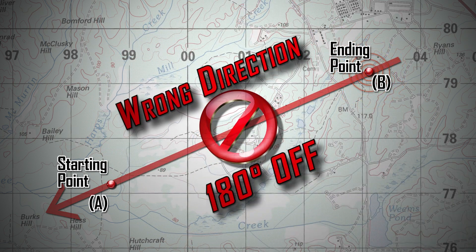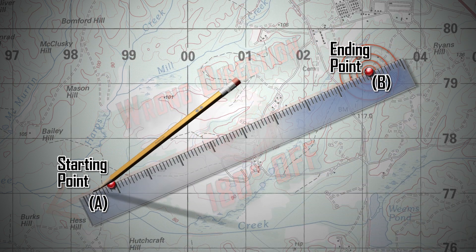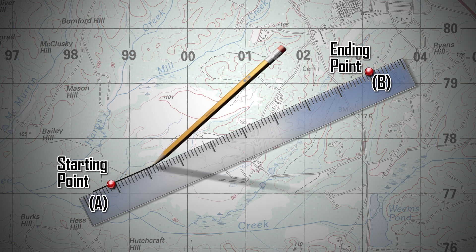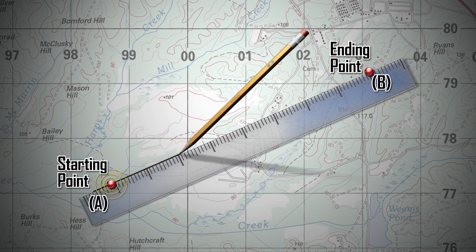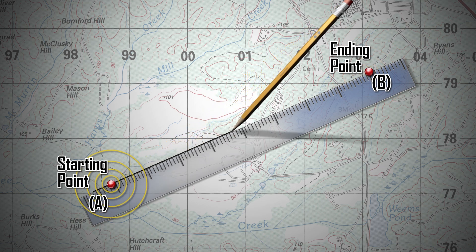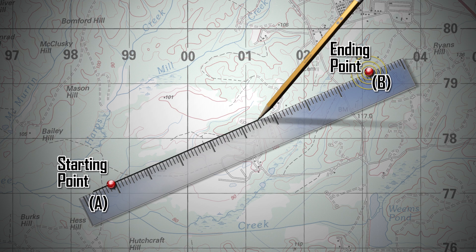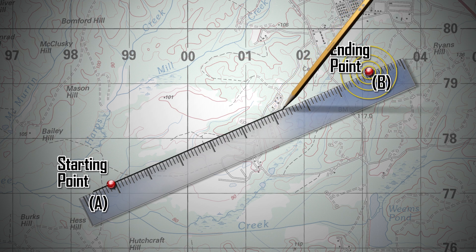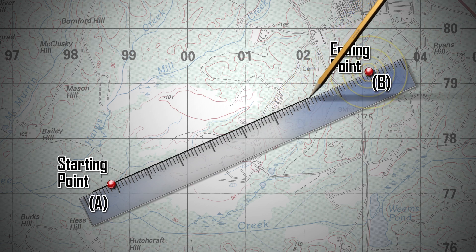Using a straight edge, draw a line on the map connecting the starting point A and the ending point B, extending the line beyond both points.